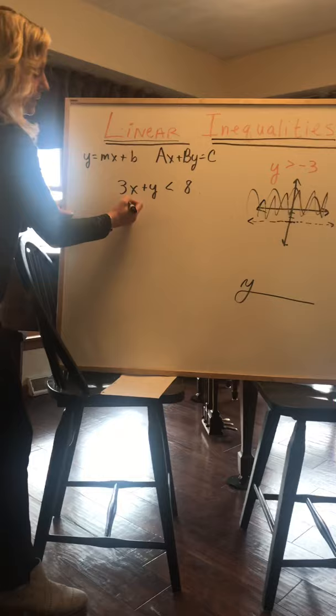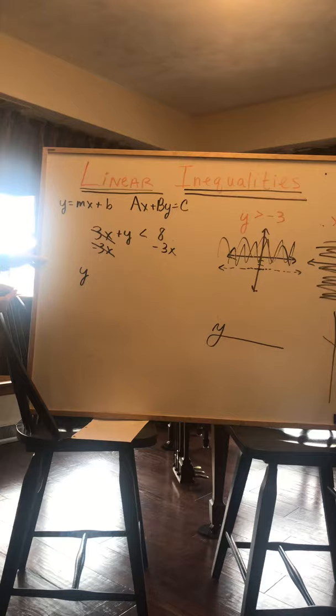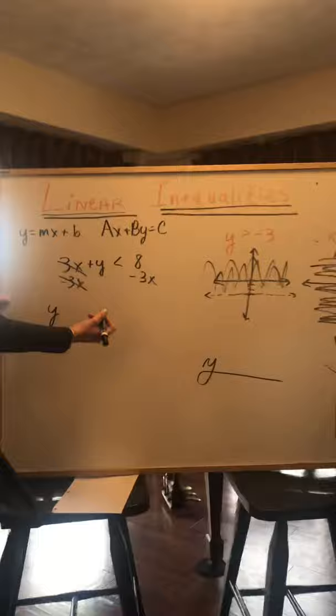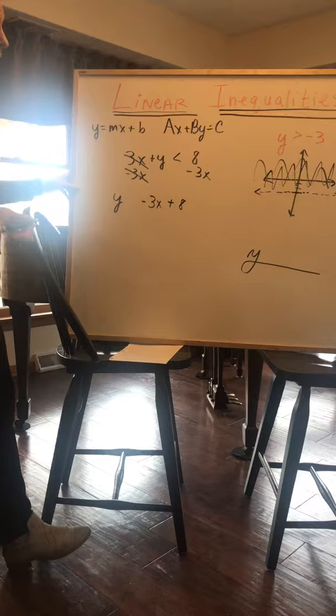So to do that, we subtract 3x from both sides. 3x minus 3x is 0, those cancel. So we have our y. And we know we cannot subtract 3x from 8. So we have to write those separately. And what we're going to do to make it look like slope-intercept form is write the negative 3x first plus 8. We did not multiply or divide by a negative number so the sign stays the same. And we're ready to graph.